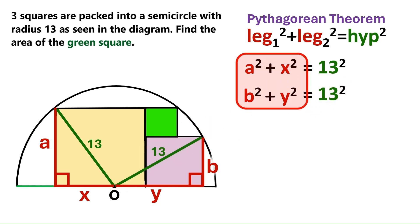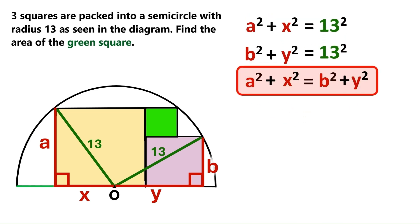Now both of these expressions equal 13 squared. So we can write down that a squared plus x squared equals b squared plus y squared. Next we take this x squared to the other side, and it becomes minus x squared. And we take this b squared to here, and it becomes minus b squared.